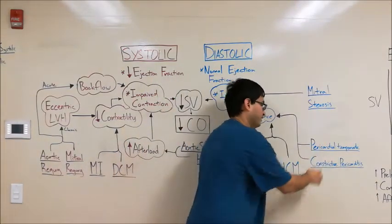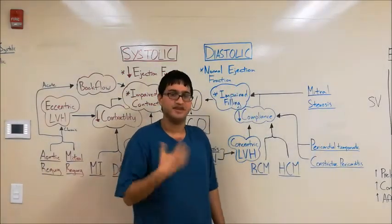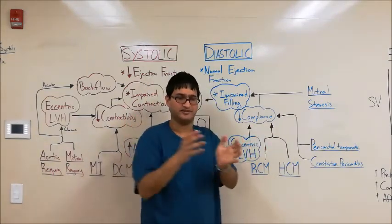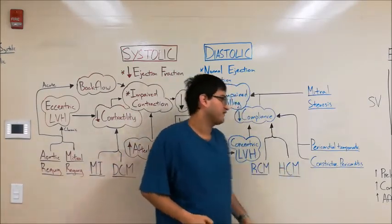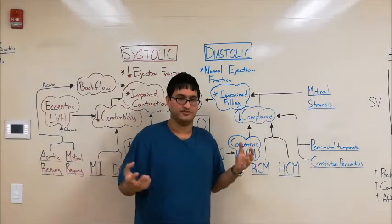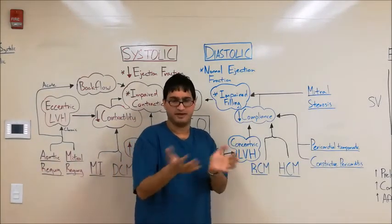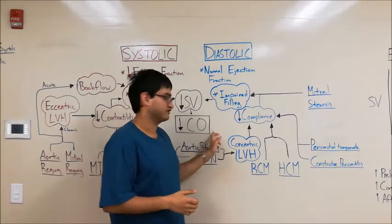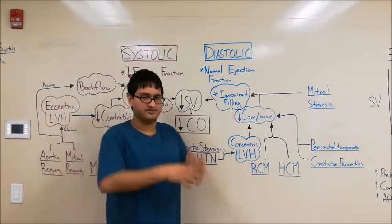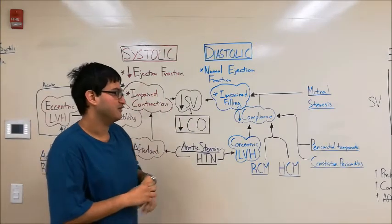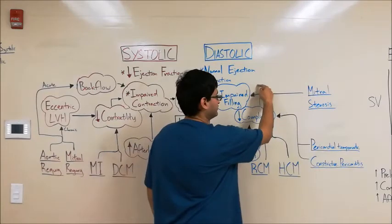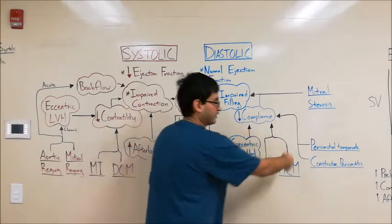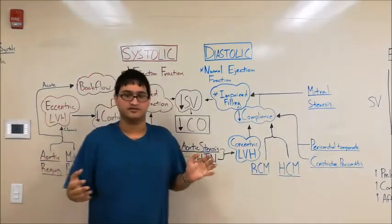In pericardial tamponade, fluid or blood fills the pericardial sac, so the ventricle has a tough time expanding and filling when surrounded by that fluid. In constrictive pericarditis, the pericardium becomes very fibrotic and stiff, so even though the ventricle can expand fine, it can't expand against the stiff sac — resulting in decreased filling and decreased cardiac output. To summarize diastolic heart failure: the problem is filling, which can be due to mitral stenosis, decreased compliance of the ventricle, or a functional decrease in compliance from pericardial disease.